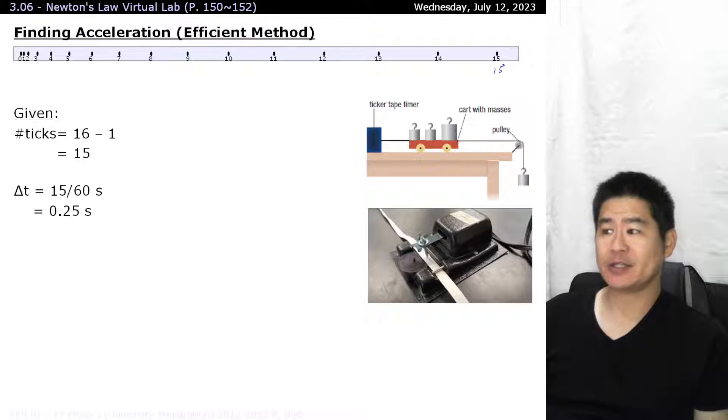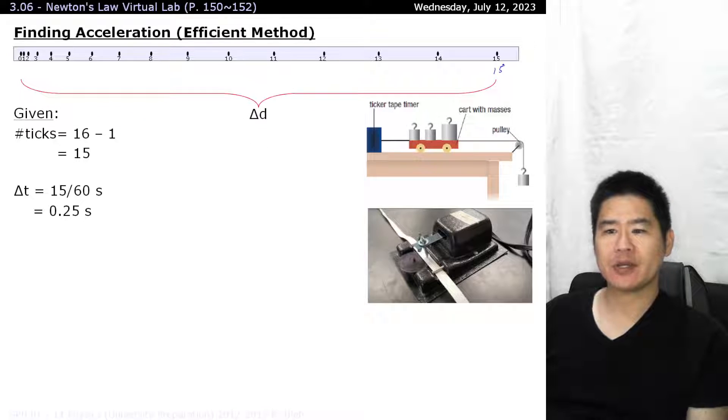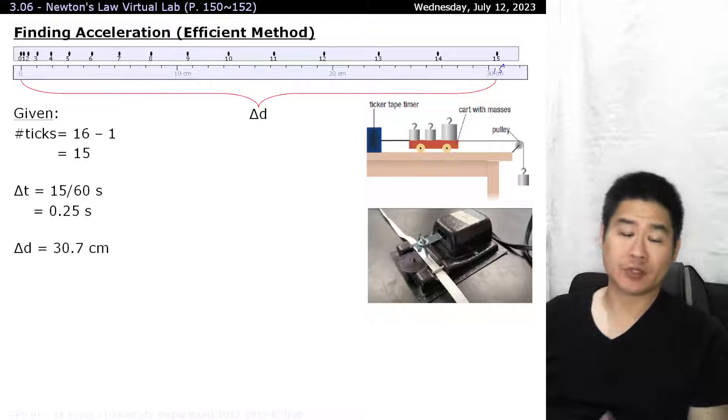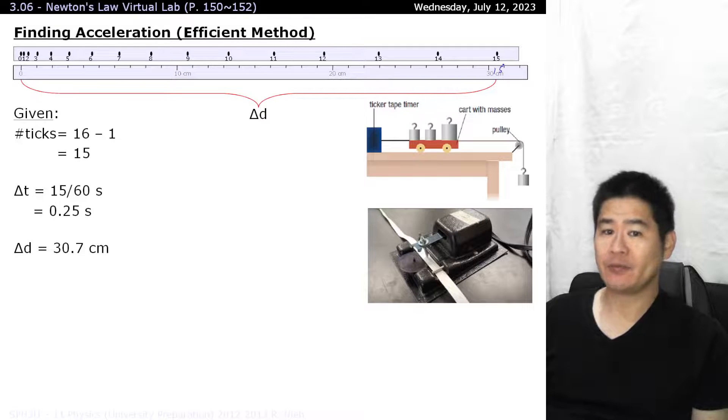Now we have the time for the experiment. Next, we got to figure out the distance that the object has moved. That's not too bad. Just pull out a ruler and carefully measure it out. Let's say that in this case over here between the zeroth dot and the last visible dot is 30.7 centimeters. Well now let's figure out the rate of acceleration.